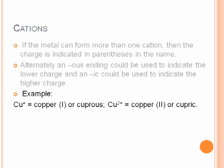For example, Cu with a plus one charge is copper Roman numeral one, it's called copper one, or cuprous with the -ous ending. Or copper with a plus two charge can be copper two or cupric. The -ous and the -ic are the older system, the Roman numeral one and two are the newer system.